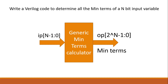The next question is on your screen, where you have to write a Verilog code to determine all the min terms of an N-bit input vector. Here 'ip' is an input vector which has a width N, and 'op' is an output vector which should have a width of 2 raised to the power N, because 'ip' has 2^N possible combinations. You can take your time to think of the answer, and if you know it please write it down in the comment section.